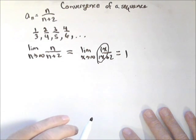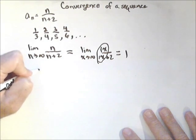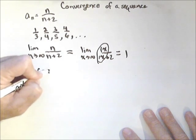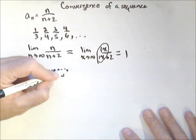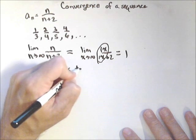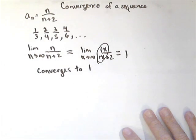This limit equals one. If we can calculate the limit, the sequence converges. And in fact, it converges to whatever that limit is. So this sequence definitely converges.